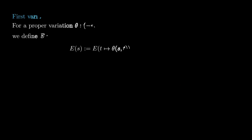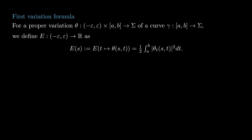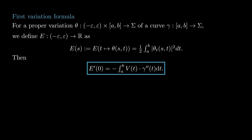We say that a variation theta is proper if theta(s,a) equals gamma(a) and theta(s,b) equals gamma(b) for all s. A proper variation represents a family of curves near gamma with the same endpoints as gamma, which implies that V vanishes both at the initial time and the final time. Now let theta be a proper variation and let E(s) be the energy of the curve theta(s,t). We claim that the derivative of the energy with respect to s at 0 is given precisely by minus the integral from a to b of the dot product between the acceleration of gamma and the direction of the variation.